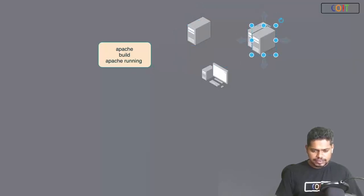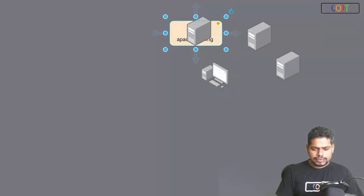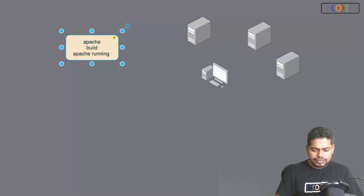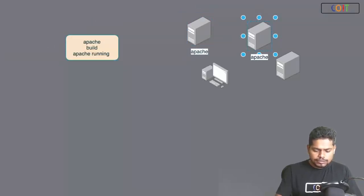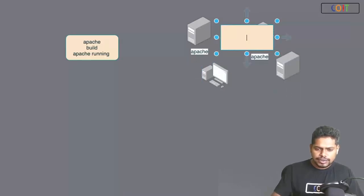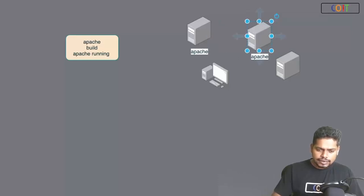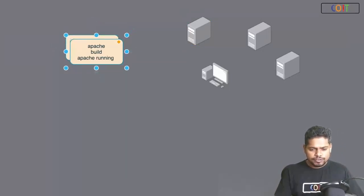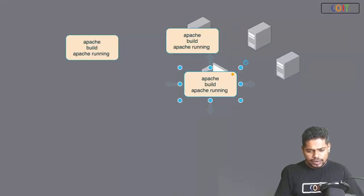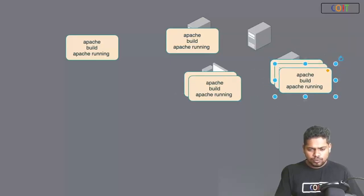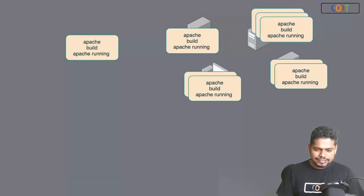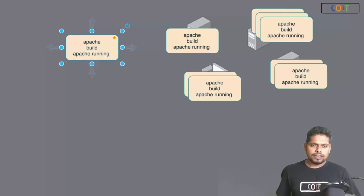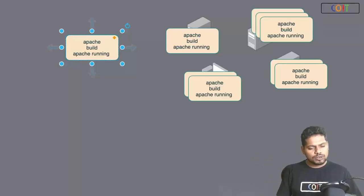The container can run anywhere — inside a developer's laptop, inside a QA engineer's laptop, inside any server in the cloud. You don't have to worry about installing Apache inside these machines to run the frontend, because Apache is already inside your container. All you have to do is copy the container to whichever machine you want. If you want to run more than one container in each machine, absolutely no problem.